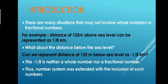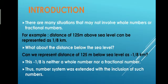We know that 1 meter is equal to 1 upon 1000 kilometer, which means we divided by 1000 to get 1 upon 8 kilometer. What about distance below the sea level? Can we represent a distance of 125 meters below sea level as minus 1 upon 8 kilometer? This minus 1 upon 8 is neither a whole number nor a fractional number.